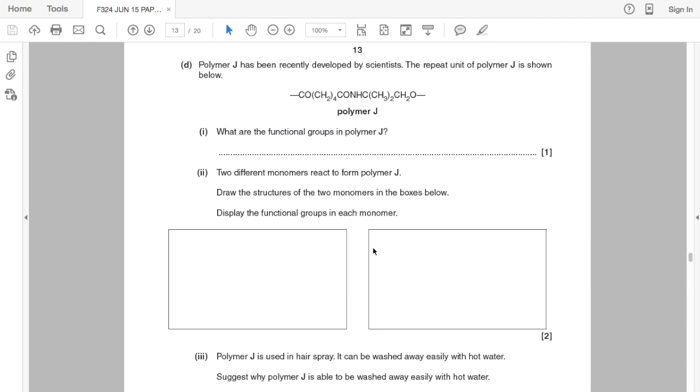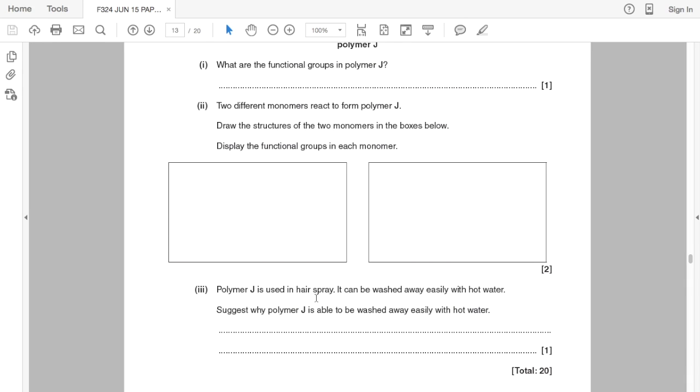Next part of the question, polymer J. We're given the repeat unit and we have to say what the functional groups are in polymer J. And then we've got to come up with the structures of the two monomers that would form polymer J and display the functional groups in each of the monomers. And then the very last part of the question, polymer J is used in hairspray and can be washed away easily with hot water. Suggest why?